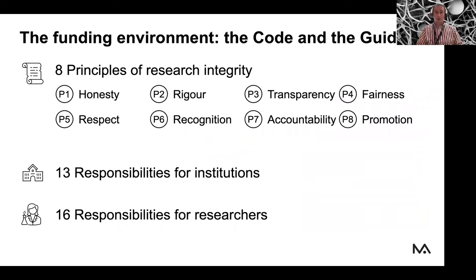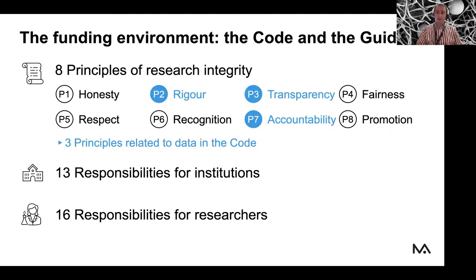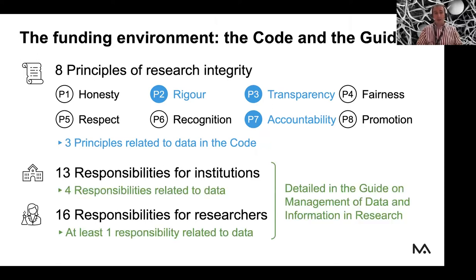If you take the code and the guide in total, that's eight principles for research integrity, 13 responsibilities for institutions, and 16 responsibilities for researchers. Together, they form a framework for the responsible conduct of research when it comes to data and data management. About data specifically, there are three principles related to data in the code, four responsibilities for institutions related to data, and at least one for researchers.